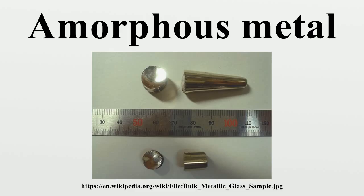More recently, a number of alloys with critical cooling rates low enough to allow formation of amorphous structure in thick layers have been produced. These are known as bulk metallic glasses. Liquid Metal sells a number of titanium-based BMGs developed in studies originally performed at Caltech. More recently, batches of amorphous steel have been produced that demonstrate strengths much greater than conventional steel alloys.